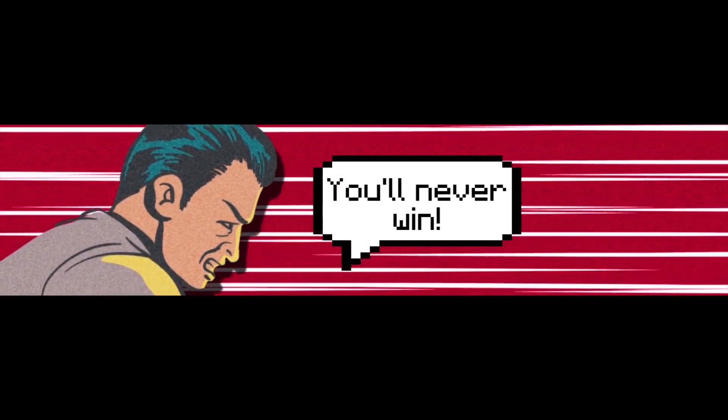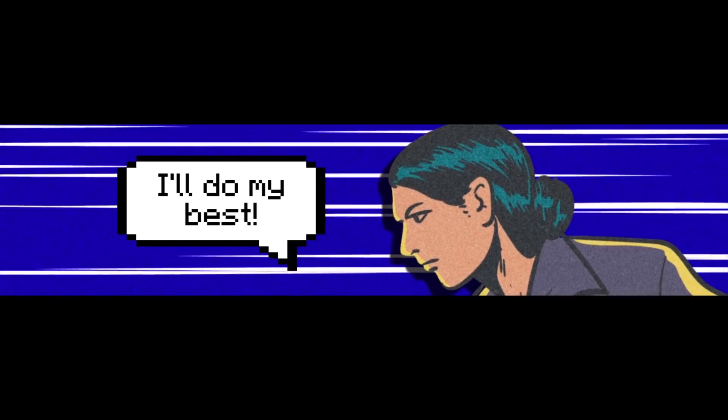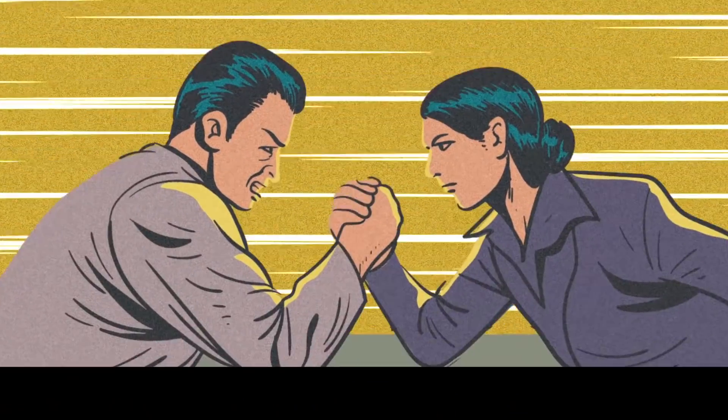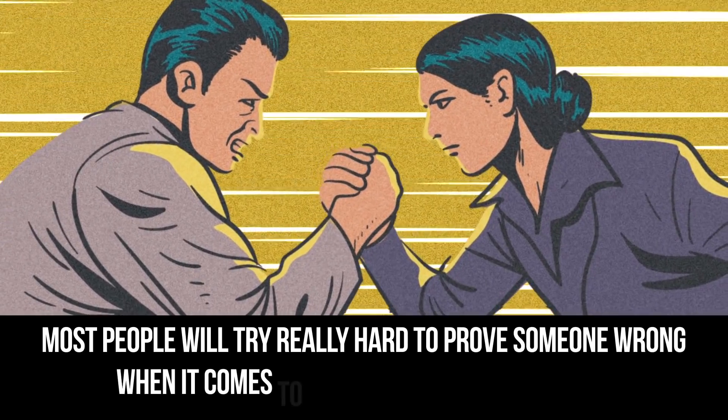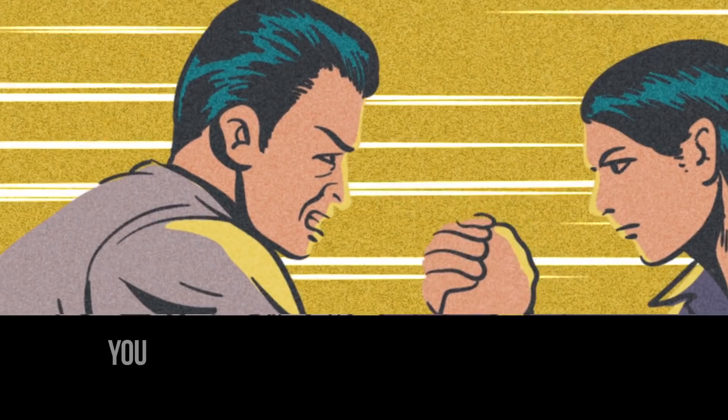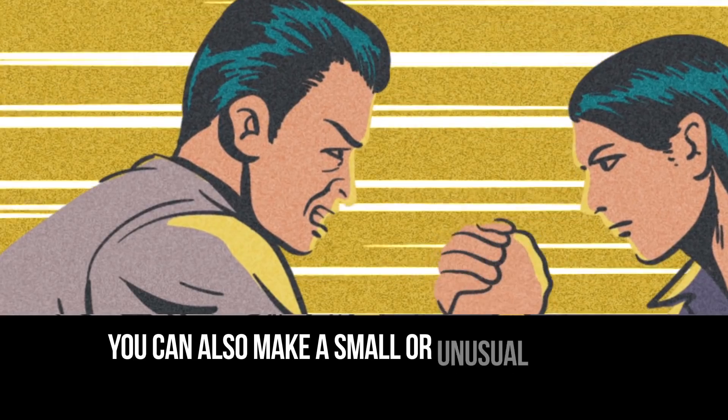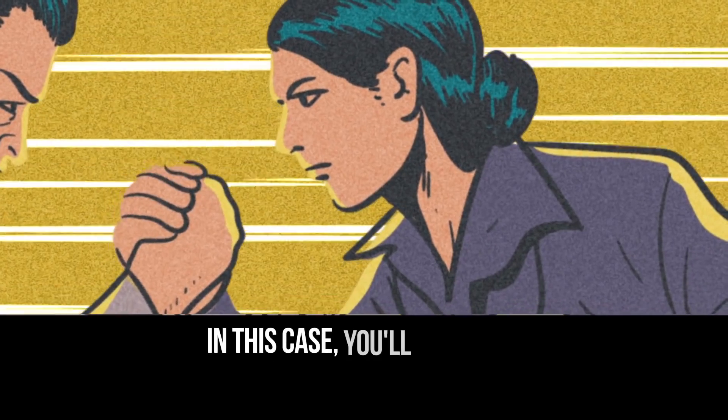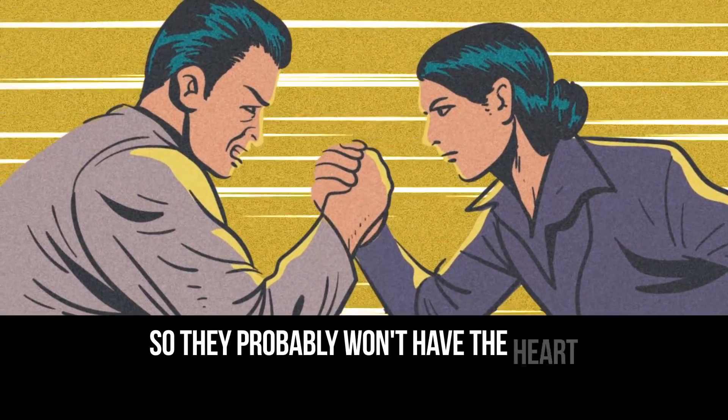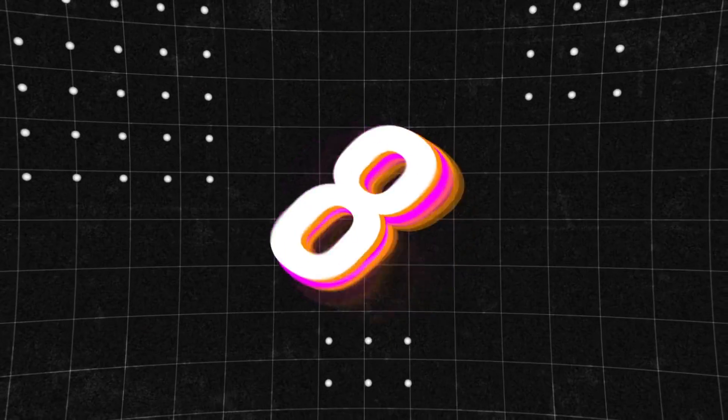Number 7. If you want somebody to do something for you, casually say how they probably wouldn't even be able to do it. Most people will try really hard to prove someone wrong when it comes to doubting their capabilities. You can also make a small or unusual request before getting down to the main issue. In this case, you'll establish a connection with the person so they probably won't have the heart to turn you down afterwards.